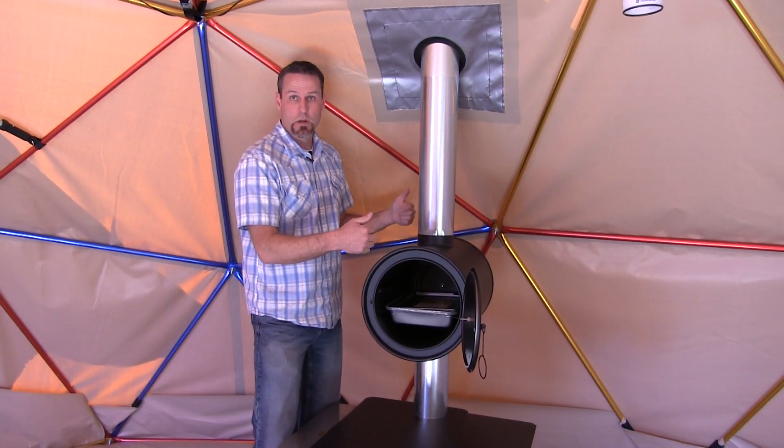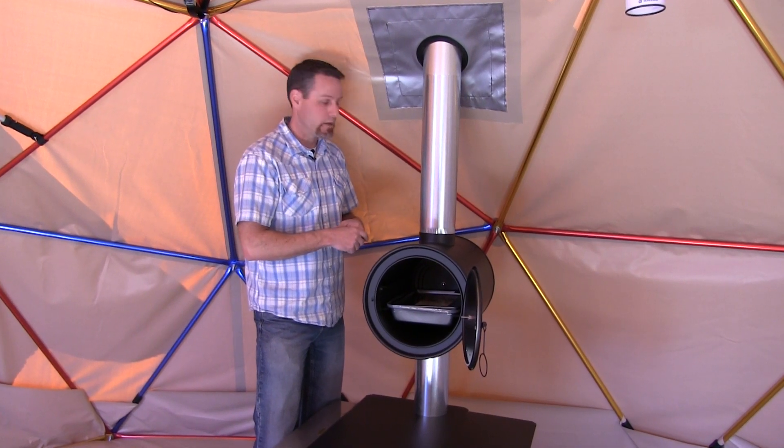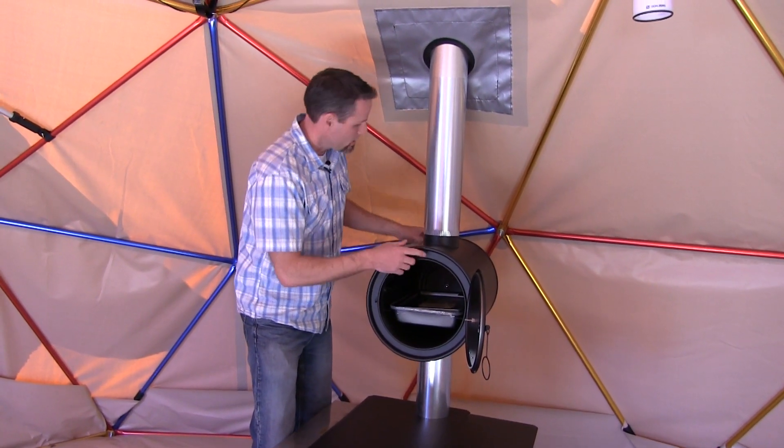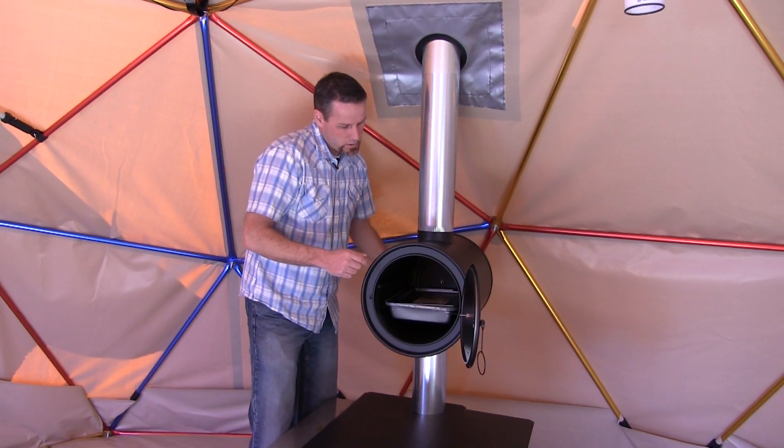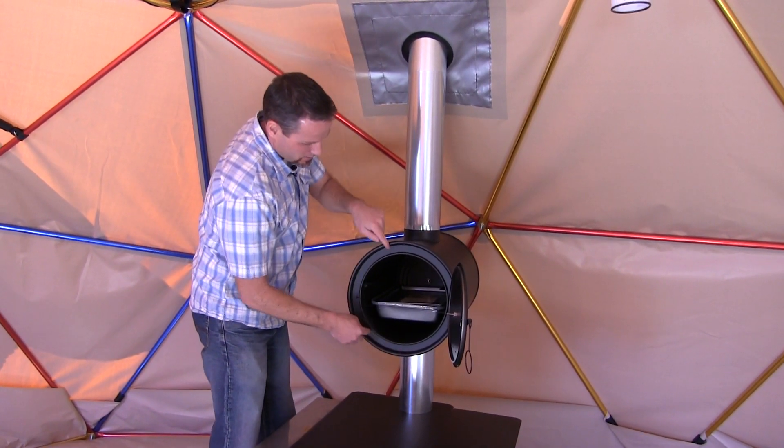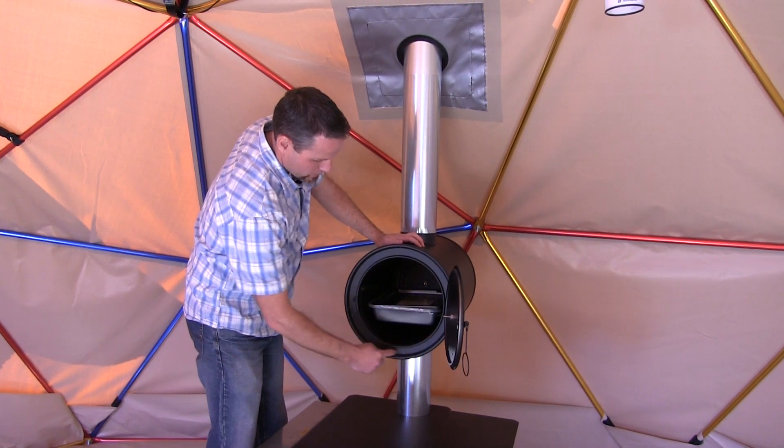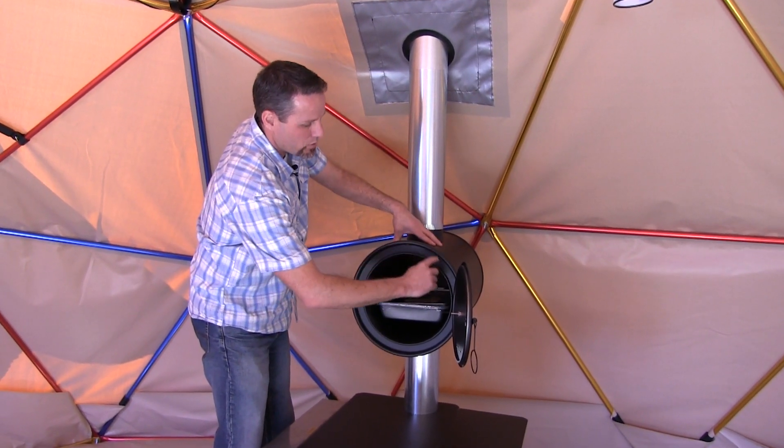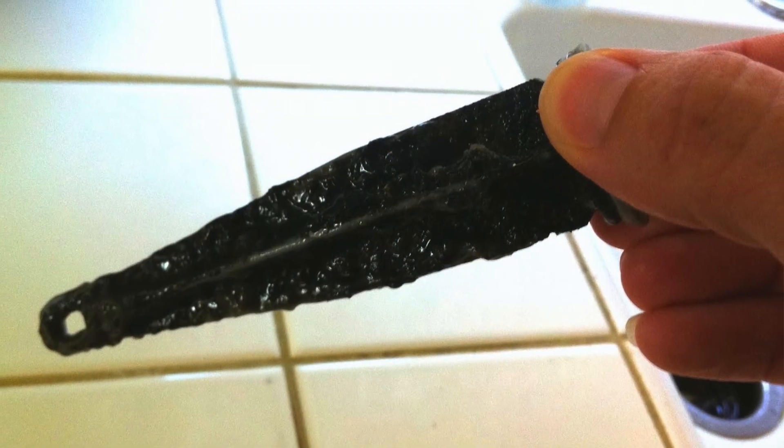If you don't have a way to clean it out, it will build up and become a fire hazard. They've created a system where on the back of it there's a—you can hear it, it's kind of loud—it's got a metal rod that spins on both sides that'll break that creosote free.